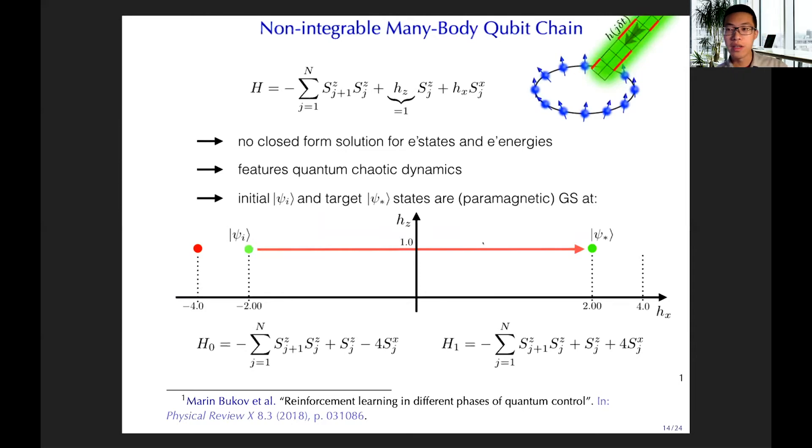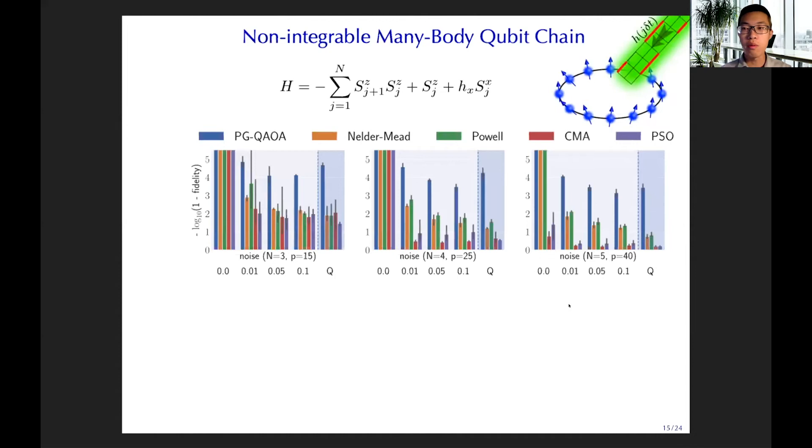So beyond the single qubit, we also do the experiment on many qubits and many body qubit cases. Here is the Ising chain with the periodic boundary condition. Our initial and target quantum state are chosen to be the ground state of HX equal to minus two and two. And our Hamiltonian we use is H0 and H1, which corresponds to HX equal to minus four and four. We compare our algorithms with various other black box optimizations.